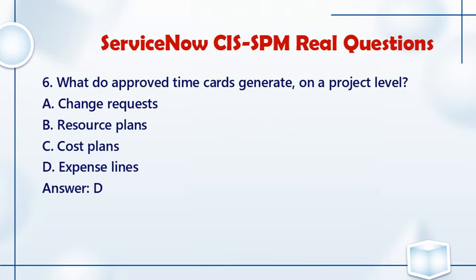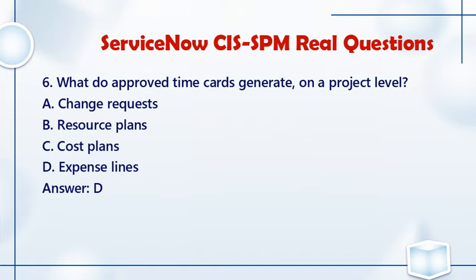Question 6: What do approved time cards generate on a project level? a. Change requests. b. Resource plans. c. Cost plans. d. Expense lines. Answer: D.